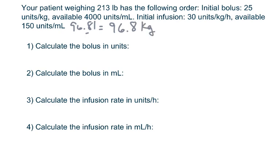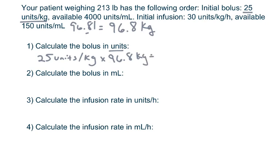Calculate the bolus in units. He's getting 25 units per kilogram, so multiply 25 units per kilogram times his 96.8 kilograms. Kilograms cancel. 25 times 96.8 equals 2,420 units.